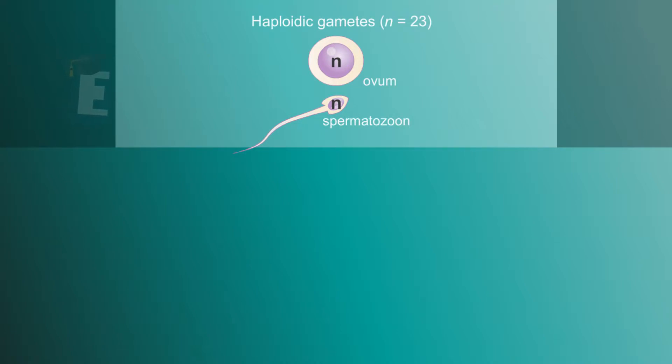At this stage, the cell formed by the union is haploid, meaning it only has 23 chromosomes, half the number of parent chromosomes. It is caused by meiosis, a process of cell division.